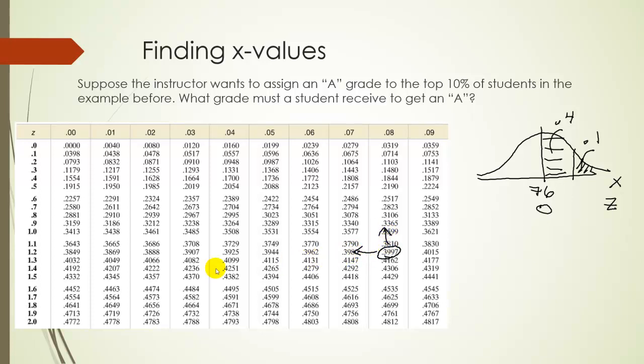So looking left, we see the first two numbers are 1.2, and the last digit would be 8. So we get 1.28 is our z-score. So from this, we're going to use our formula that x equals μ plus zσ to figure out what the actual x-value is.